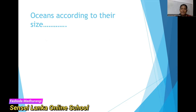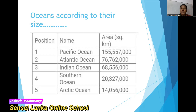Today the lesson is easy. Now we are going to learn the oceans according to their size. We are going to list them out according to their size. To understand their size, we have to think about the area in square kilometers. Now let's look at this table on my screen. There are three columns: first, the position; second, the name; third, the area given in square kilometers. When you look at the area, you can see the largest ocean — it is the Pacific Ocean.